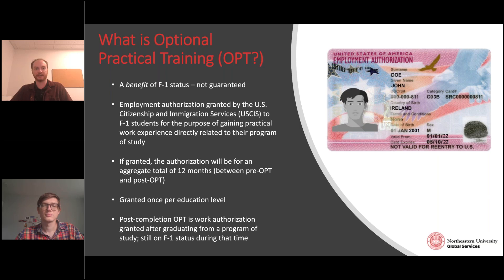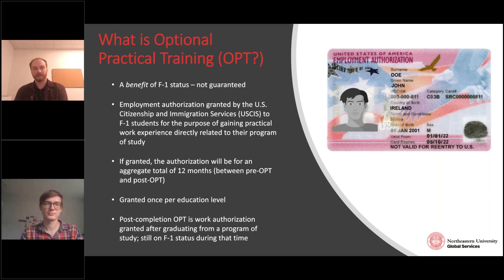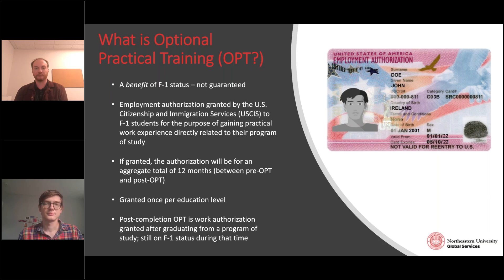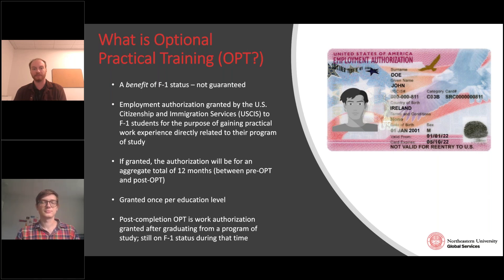It is important to remember that OPT is a benefit and it is not guaranteed. For a variety of reasons you could be denied or found ineligible. The expectation should not be that just because you completed a program at Northeastern you are automatically entitled to OPT — it is tied to valid maintenance of your F1 status. Authorization will be granted by U.S. Citizenship and Immigration Services, which we will refer to as USCIS, and they will issue your Employment Authorization Document, or EAD card.